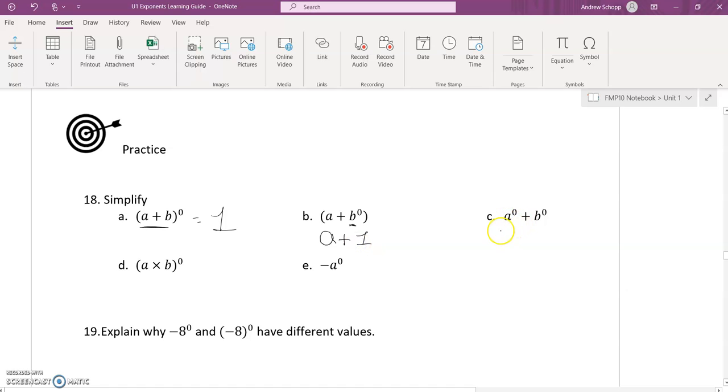For part C, we have a^0 + b^0. So a^0 is one, and b^0 is also one, which gives us two. For part D, the base is a times b, and that whole thing is being raised to the power of zero, so we get one. For part E, we have the negative of a^0. So the base here is just a being raised to the power of zero, which is one, giving us negative one.